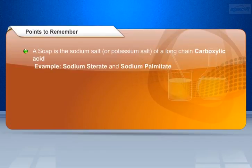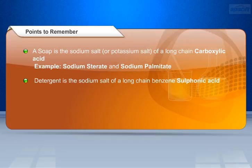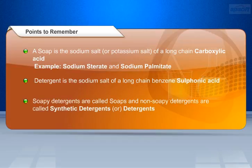Let us recollect some important points in brief. A soap is the sodium salt or potassium salt of a long-chain carboxylic acid — for example, sodium stearate and sodium palmitate. Detergent is the sodium salt of a long-chain benzene sulfonic acid. Soapy detergents are called soaps, and non-soapy detergents are called synthetic detergents, or simply detergents.